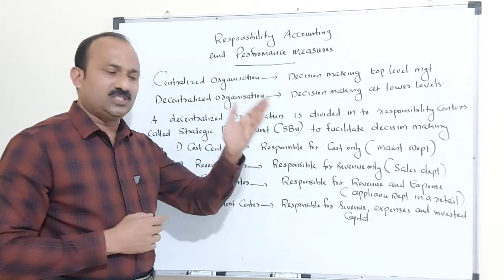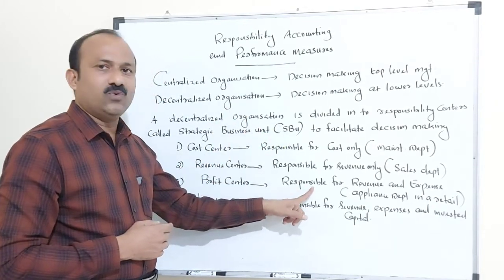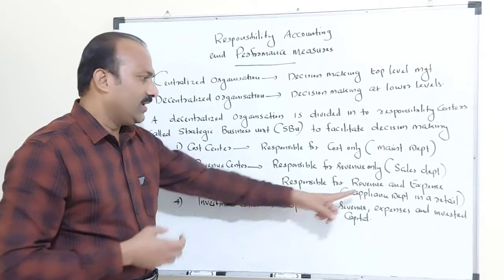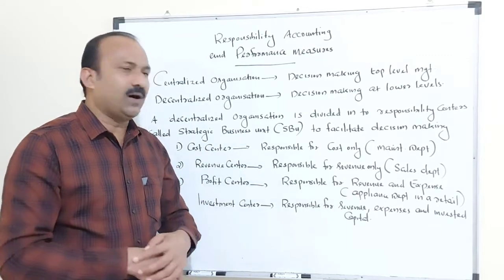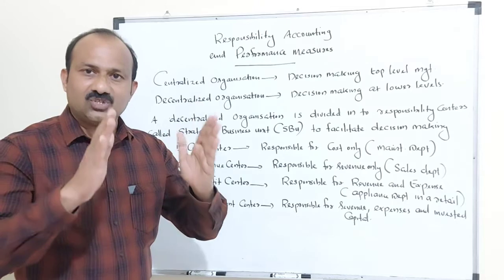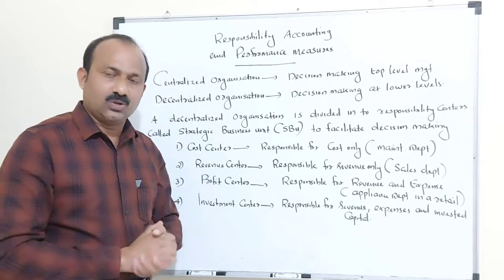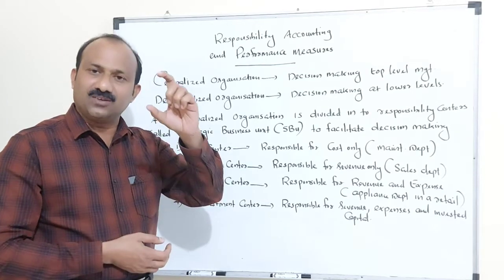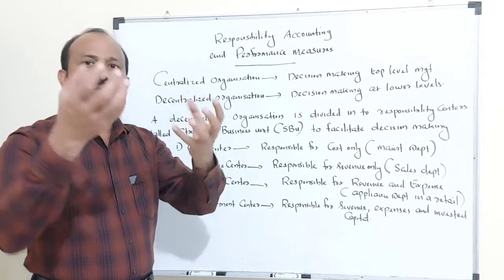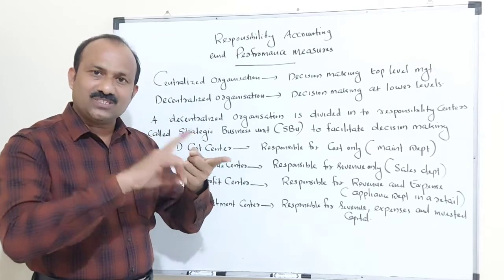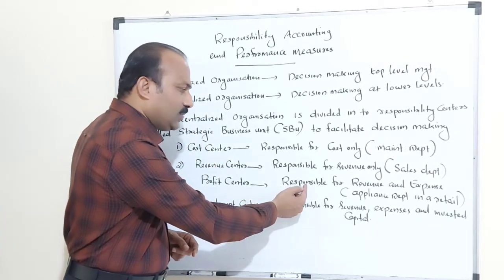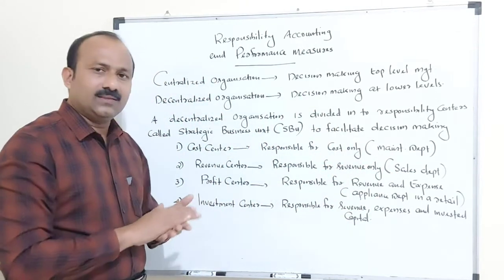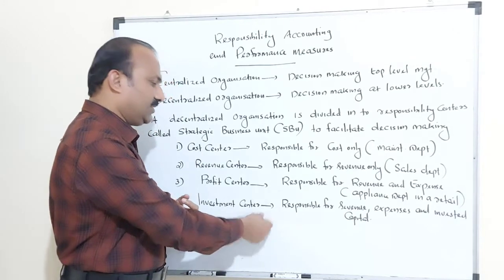Number three, Profit Center. A profit center is responsible for both revenue and expenses — they are spending and earning. For example, an appliance department in a retail store has a cost and an income, because there is a cost to manufacture and revenue when the item is sold. Therefore, it is responsible for both revenue and expenses.